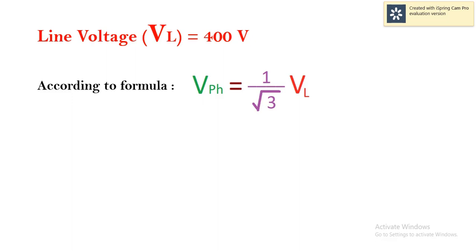Now, for the sake of calculation, we are taking line voltage as 400 volts. Therefore, according to the formula, our phase voltage equals 1 by root 3 times the line voltage. Substituting the value of line voltage in the equation, we get 400 divided by root 3.